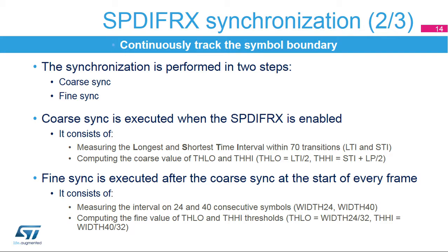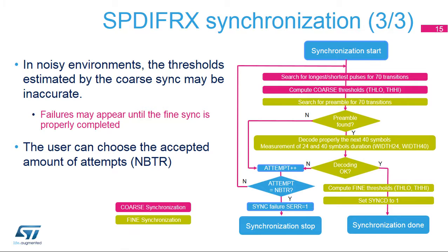In order to decode the incoming stream with good reliability, the estimation of TH-low and TH-high must be accurate. These thresholds are estimated in two steps. The coarse synchronization measures consecutive time intervals within 70 transitions and selects the longest and shortest time intervals to compute a first estimate of TH-low and TH-high. The figure shows the hardware process performed by the SPDIF-RX to properly estimate these thresholds.